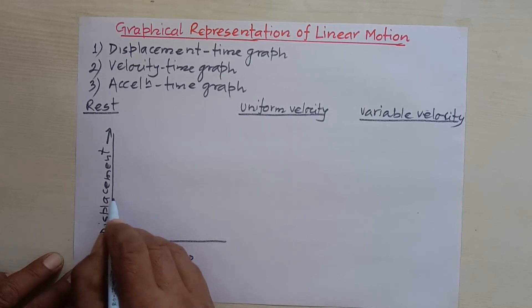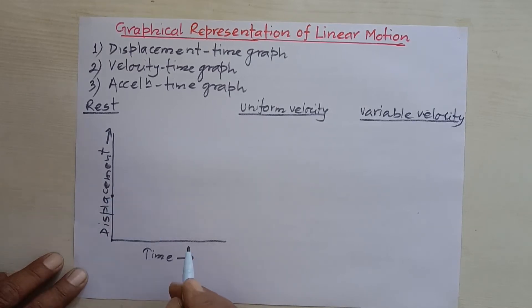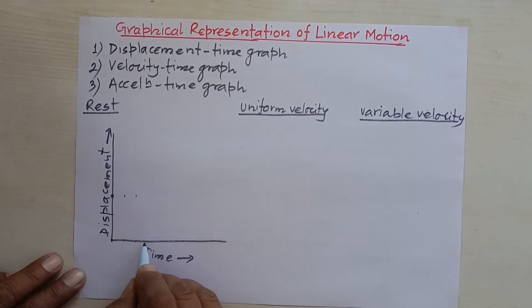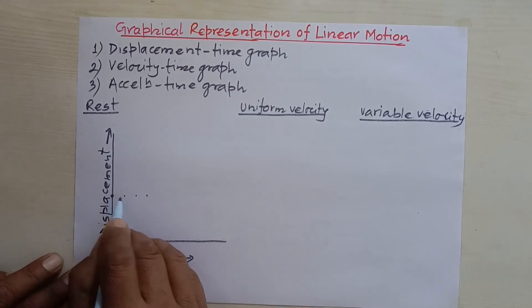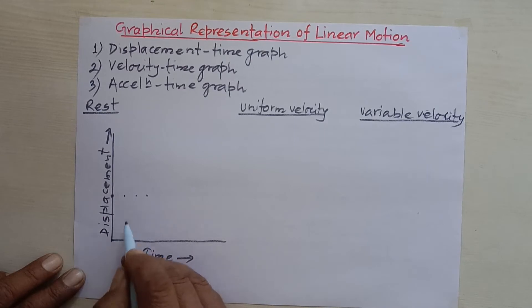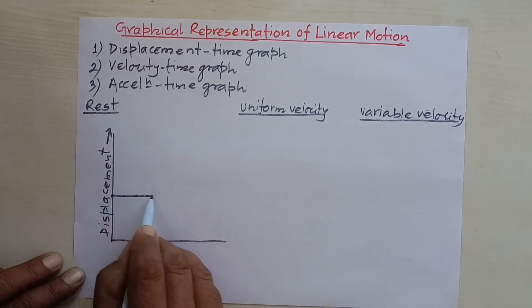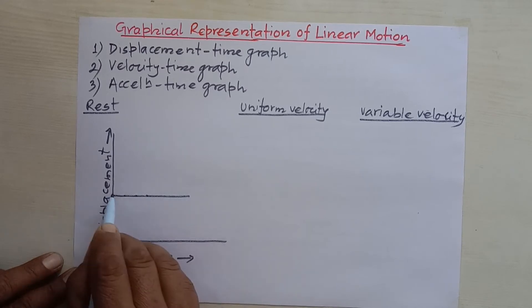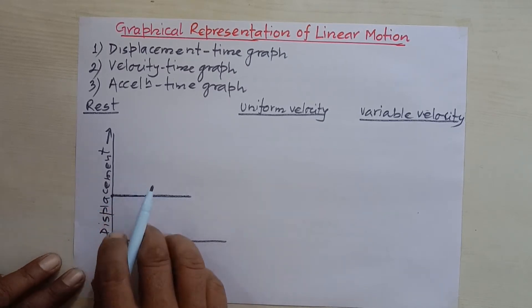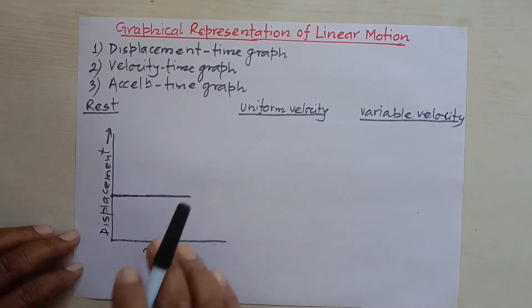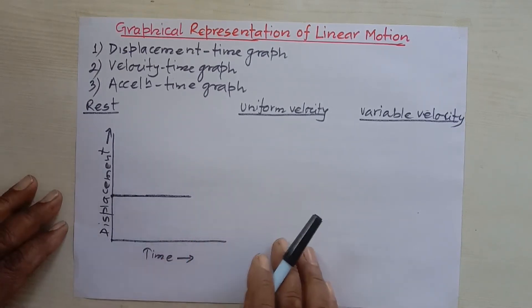If a body is at rest — let's say this is a point of reference and a body is at rest at a distance of 10 meters — then after one second it will remain in the same position. Another second also it will remain in the same position. Time keeps on increasing, but the displacement remains the same.